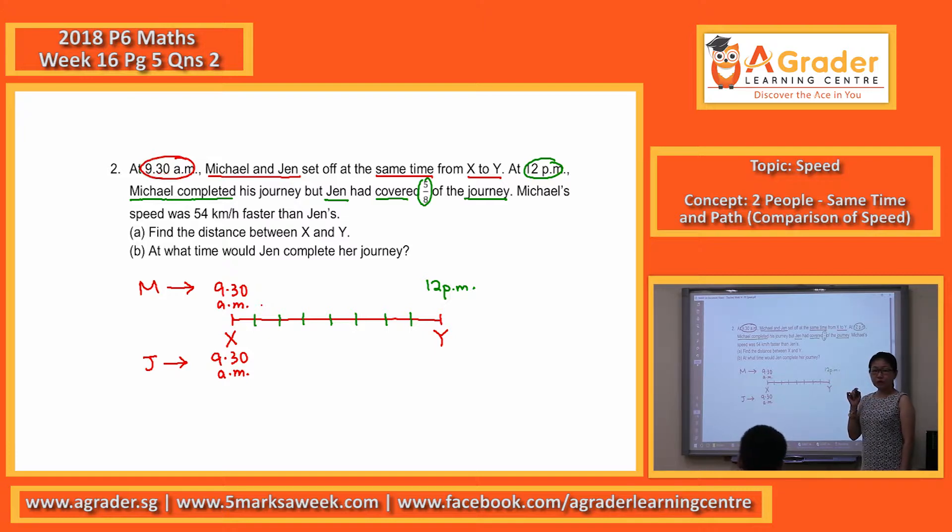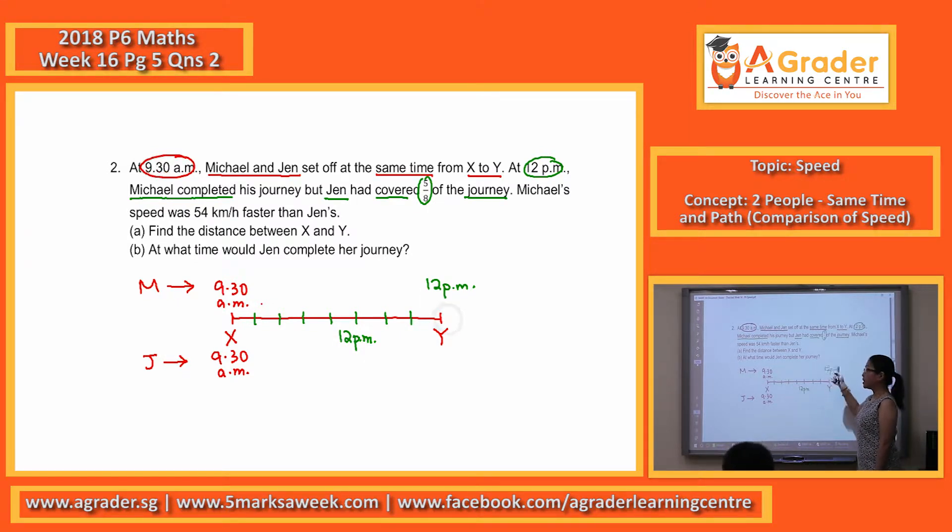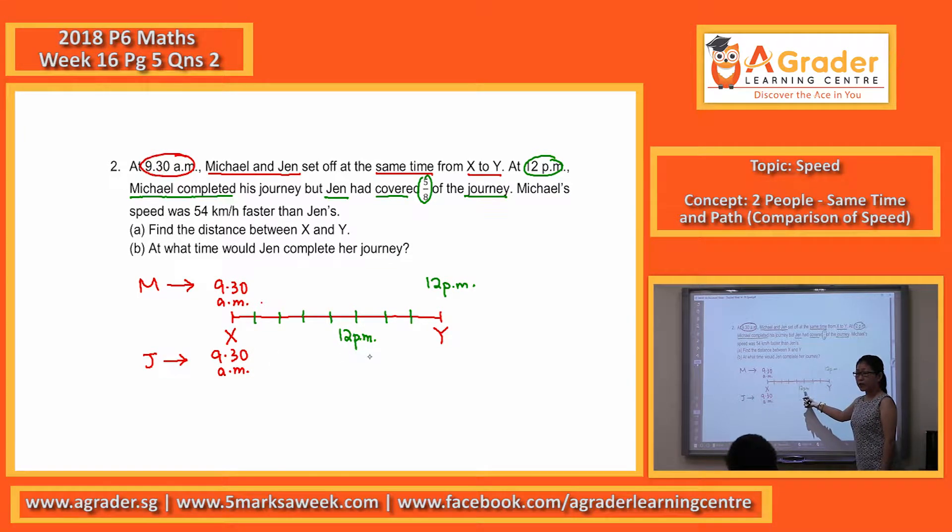So five-eighths means the fifth one, this part here. It will also be for Jen at 12 p.m. Because they start at the same time, they travel for the same period of time, except that for Michael, he reached Y at 12 p.m., but Jen only reached up to this point.